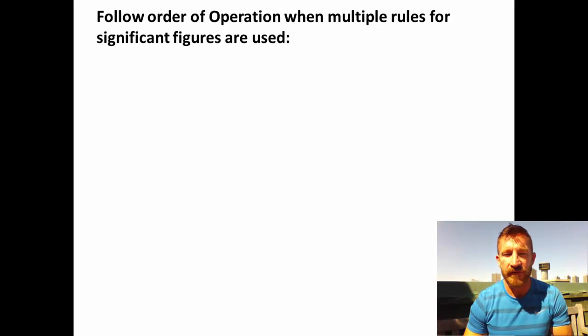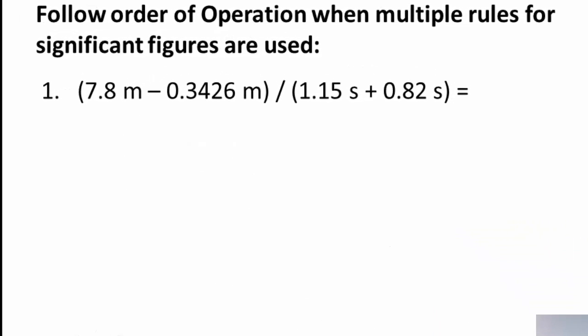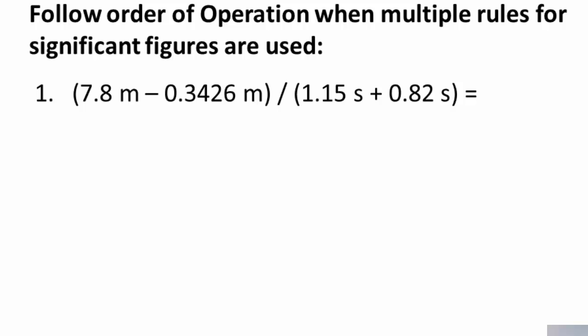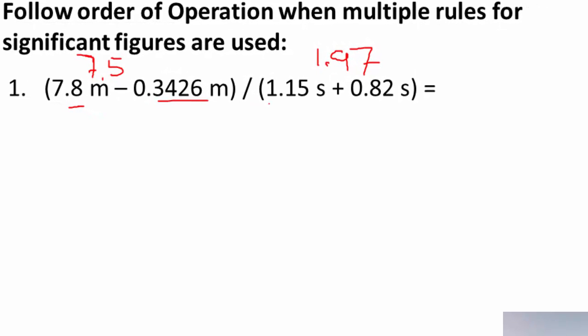Follow the order of operations when significant figure rules are used. When a problem has multiple rules, work inside parentheses first using the addition/subtraction rule, then apply the multiplication/division rule. In the first example, the subtraction inside parentheses gives 7.5 (1 place to the right of the decimal), and the addition 1.15 plus 0.82 gives 1.97. Dividing 7.5 by 1.97, the least number of significant figures is 2, so the answer is 3.8 meters per second.